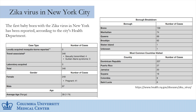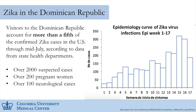New York City has the most travel-associated Zika infection cases in the country, even more than Florida. The health department recently announced the first case of microcephaly — a small head in a baby born in the city to a mother who had traveled. Washington Heights and the Bronx have the highest concentration of cases within Manhattan, with the Dominican Republic population accounting for more than a fifth of travel-associated cases in the US.